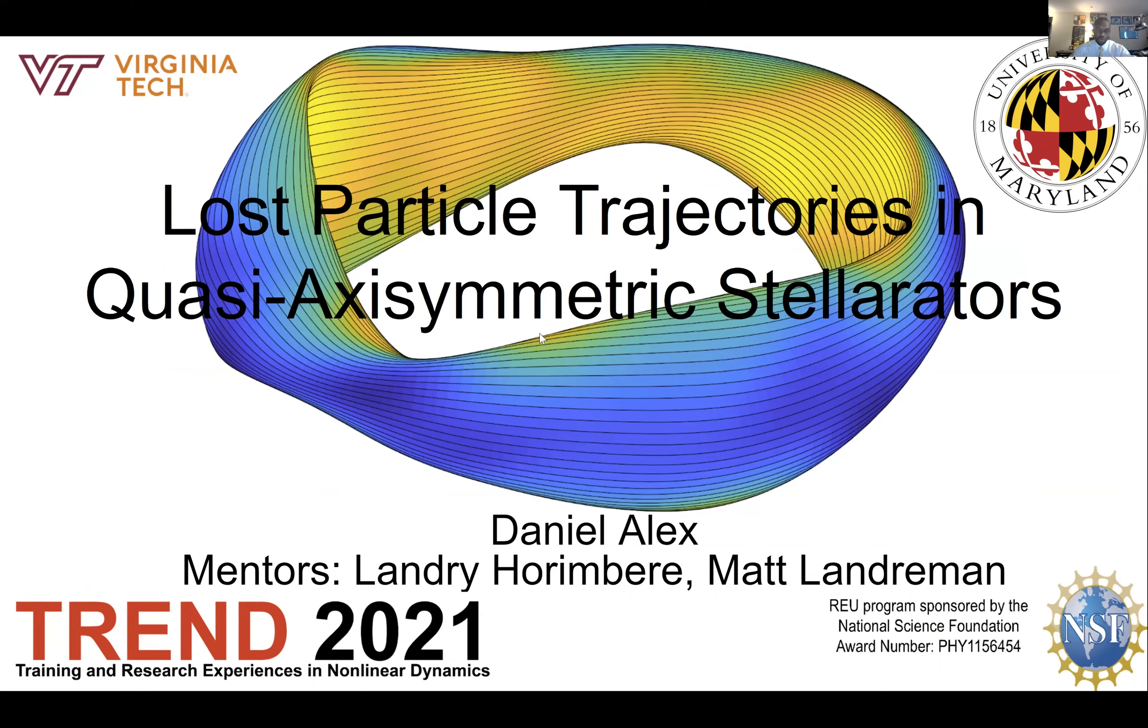Good morning everyone, afternoon. My name is Daniel Alex. And before we get into things, I'd like to talk a little bit about this shape we see on our first slide. This is a stellarator magnetic field. The colors represent field strength and the lines represent field direction.